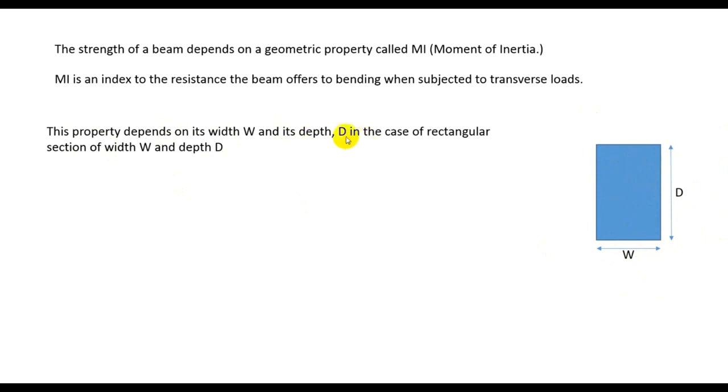In the case of rectangular section of width W and depth D, the formula is: MI equals, the equation is MI = W × D³/12. So if we go forward, now it is clear.